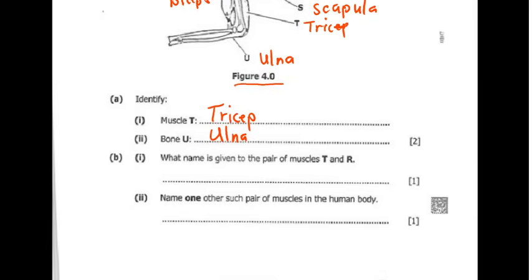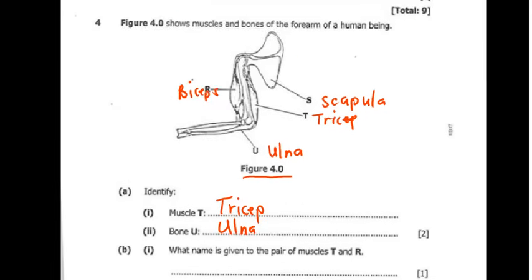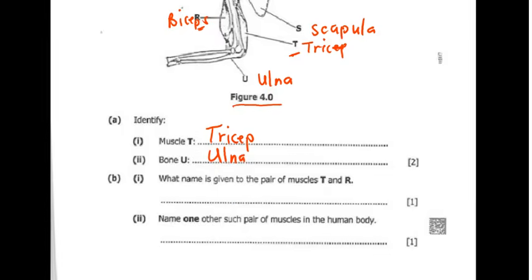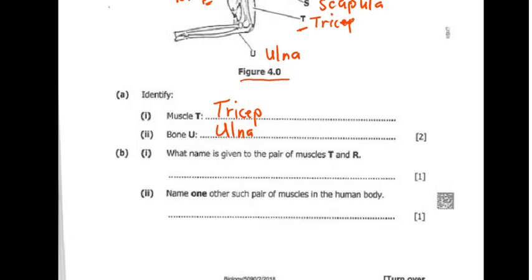Question 4B1 says: what name is given to the pair of muscles T and R? T is the tricep and R is the biceps. Together, these are called antagonistic muscles.